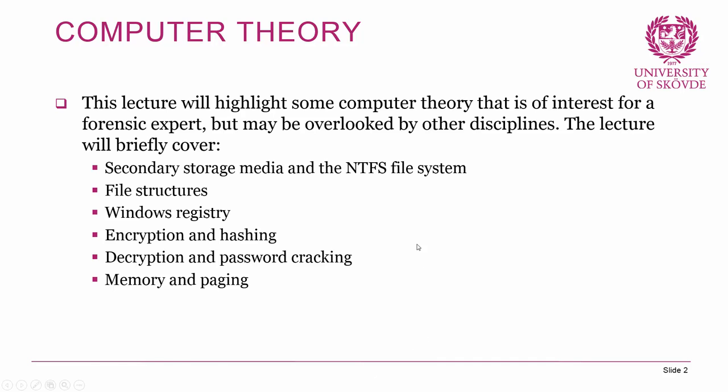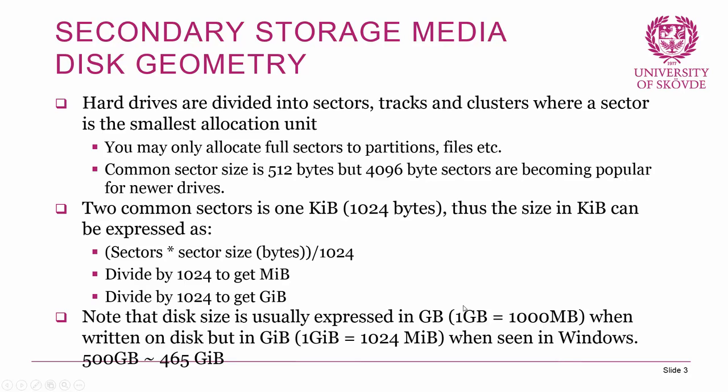Starting with secondary storage media, I first want to discuss disk geometry — basically how a disk or hard drive is structured. A hard drive is usually structured into sectors, tracks, and clusters, where a sector is the smallest allocation unit. Being the smallest allocation unit means that a sector is the smallest section of the hard drive that you can allocate to a file or a partition. The common size of a sector has traditionally been 512 bytes.